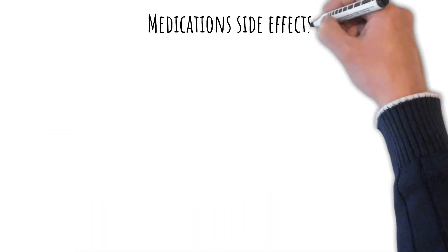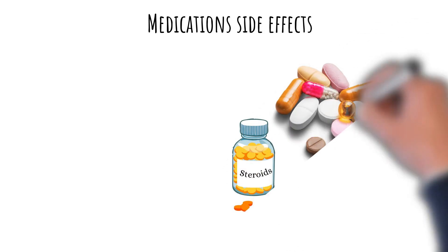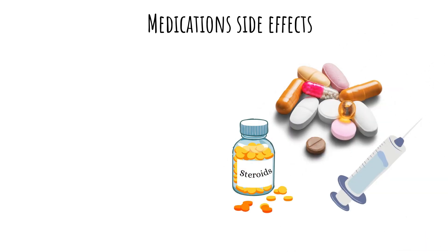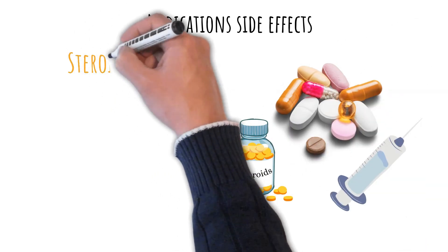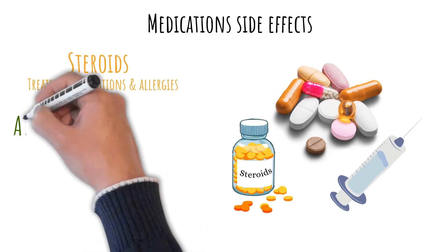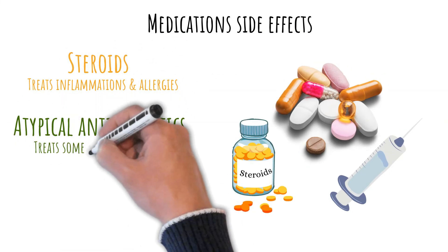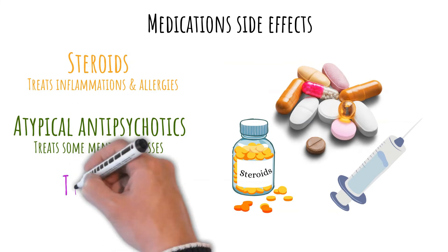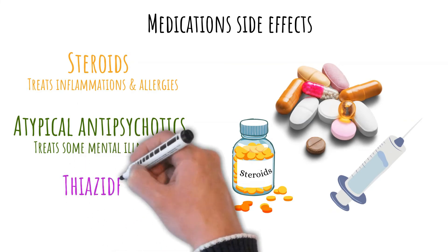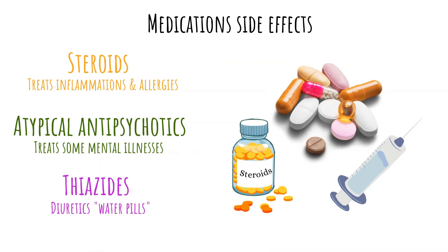The last set of factors we will talk about today is the side effects of medications. Treating other diseases may cause side effects which may lead to uncontrolled blood glucose levels and even developing diabetes. Some of those medications are steroids, atypical antipsychotics, and thiazides.